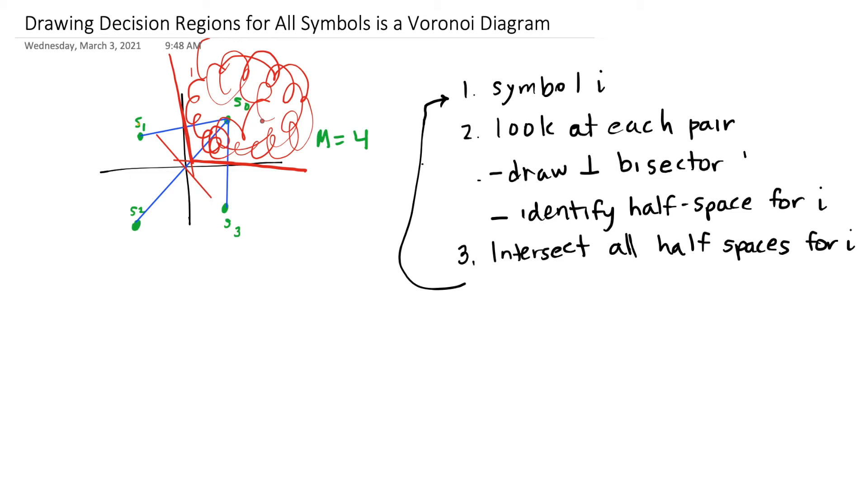Adding this half space into the intersection doesn't change the result. And that's going to be something we're going to talk about later. We're going to have to think about which neighboring symbols have a half space that changes the decision region for S0. In this case, S1 and S3 are the neighboring symbols that change the decision region for S0.